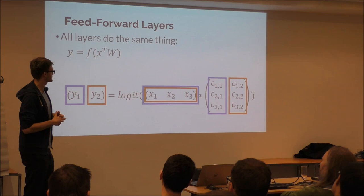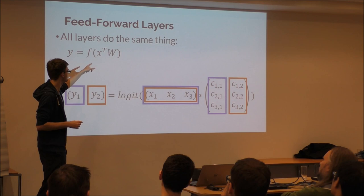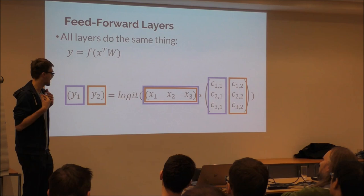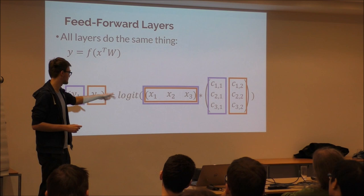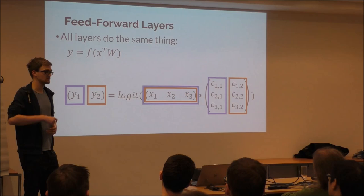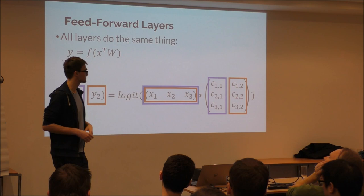These are called feed-forward layers. What that means is that in each layer we multiply x with a weight matrix, apply the non-linear activation function, and get our output, which is then fed into the input of the next layer. For example, the input x1 to x3 is multiplied with each column of the weight matrix, you get two numbers, put them through the logistic function, and then you have your output Y1 and Y2. We do this over and over again — that's the basic building block of deep learning.